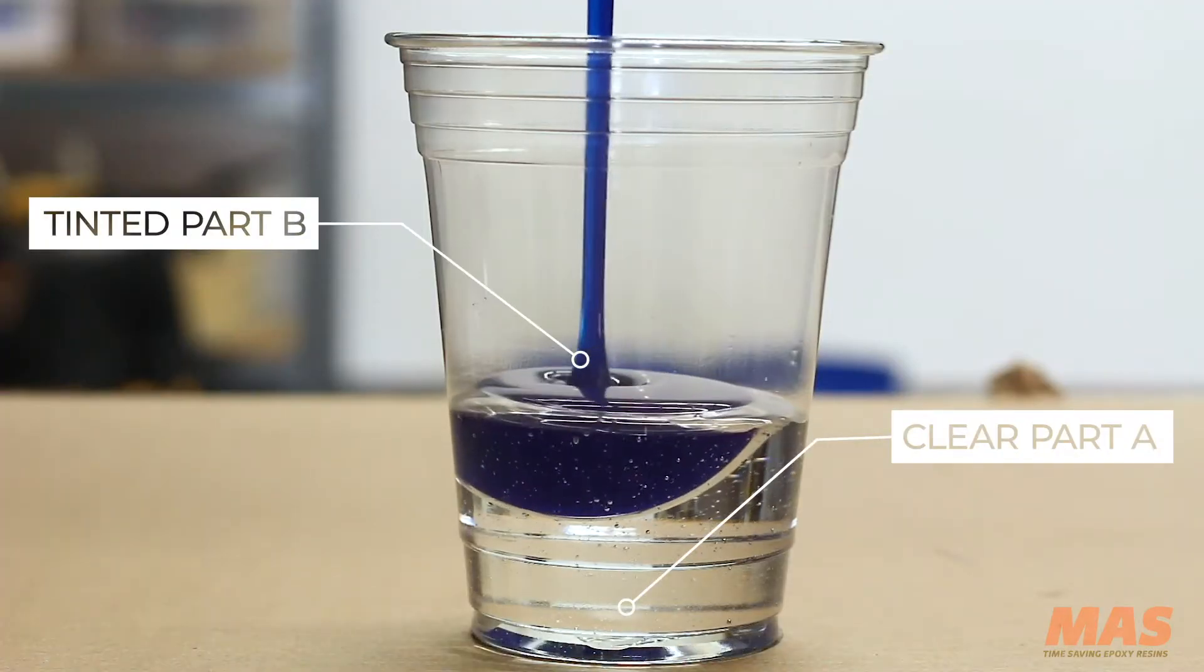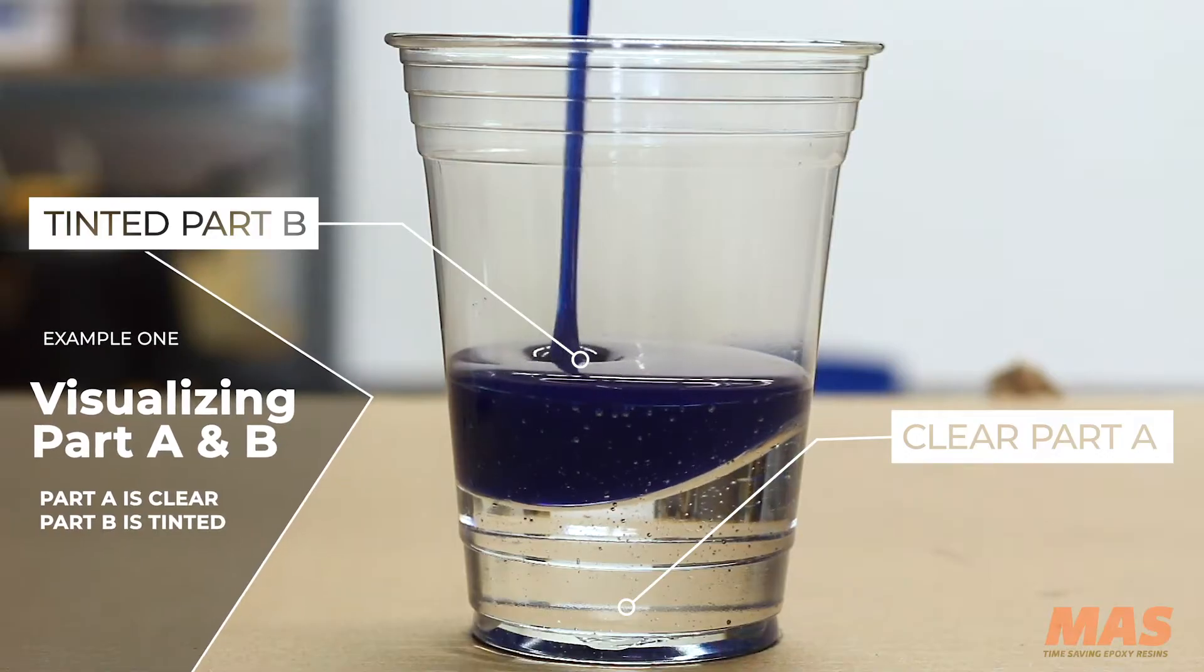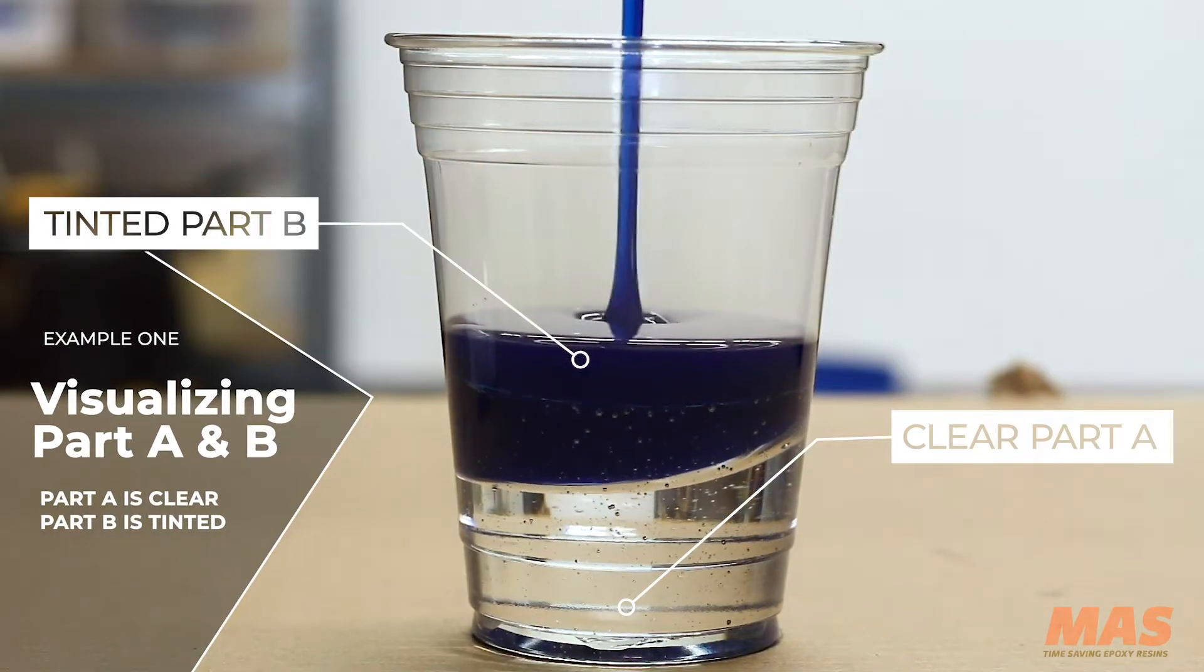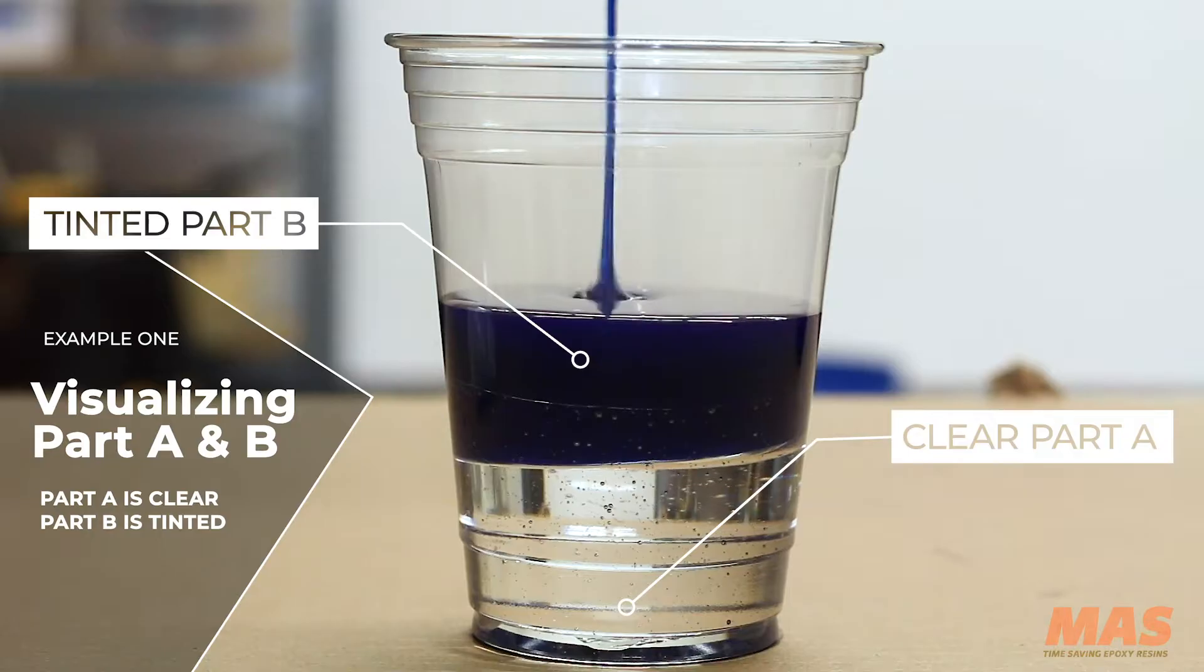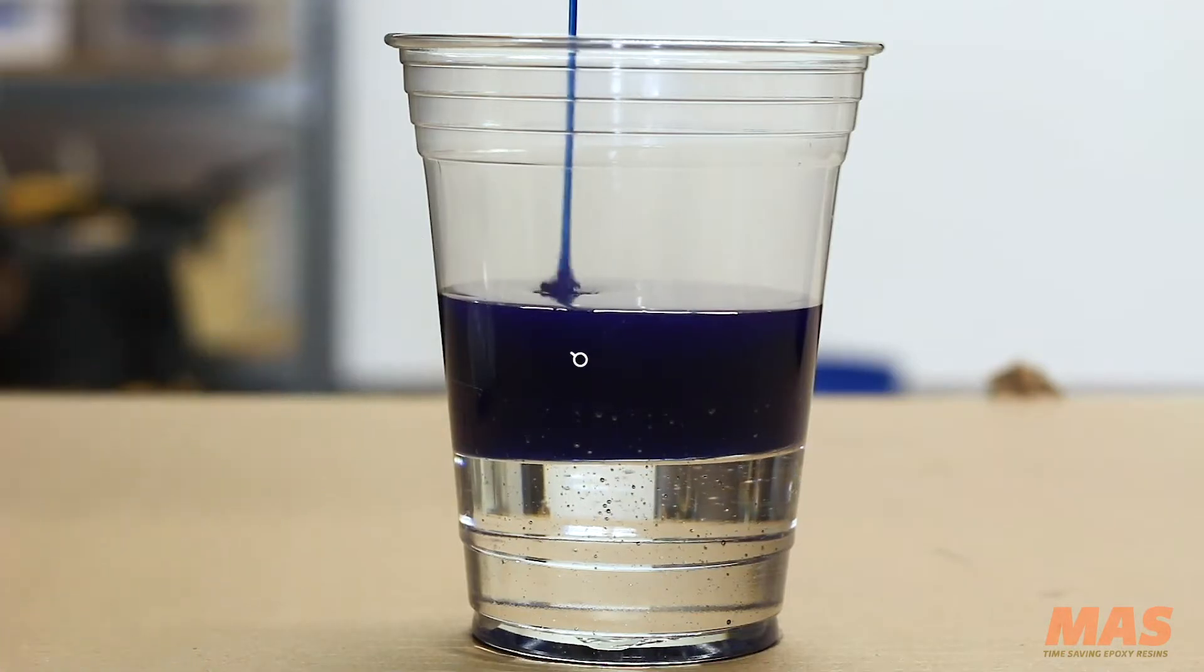For the first example we're gonna mix by hand with a stir stick. We've tinted part B so that you can see the difference between the two components, but we do recommend always mixing clear and then adding pigment after.